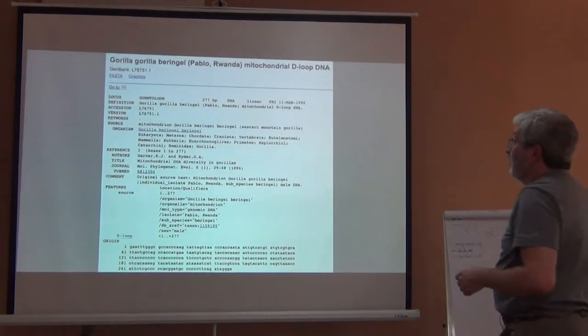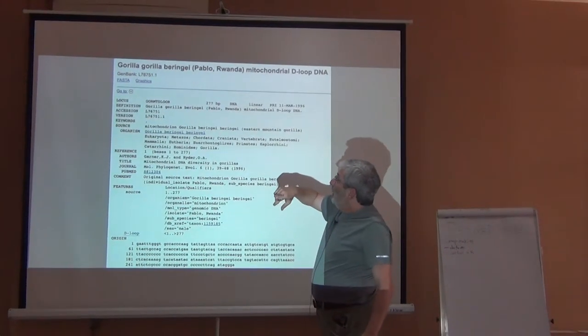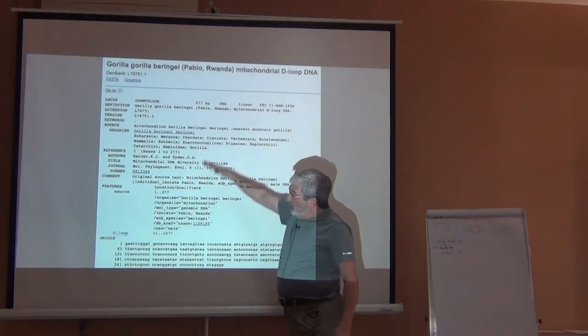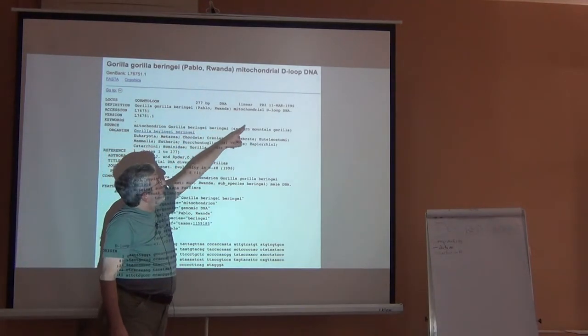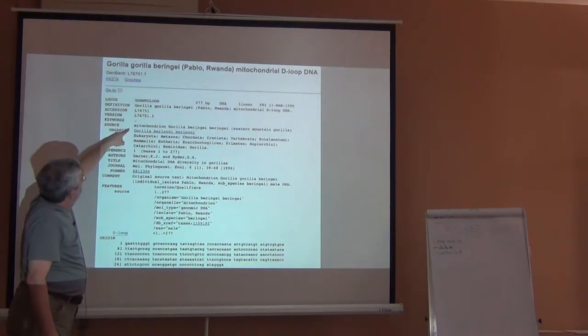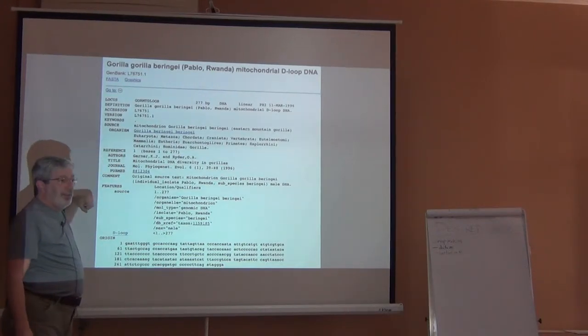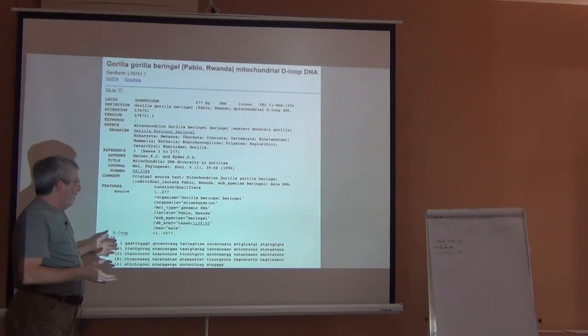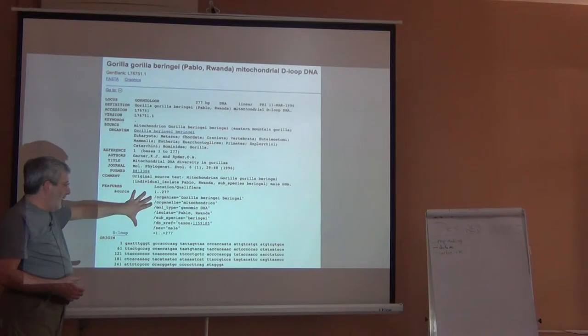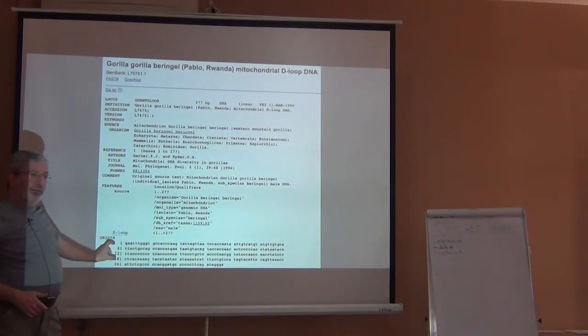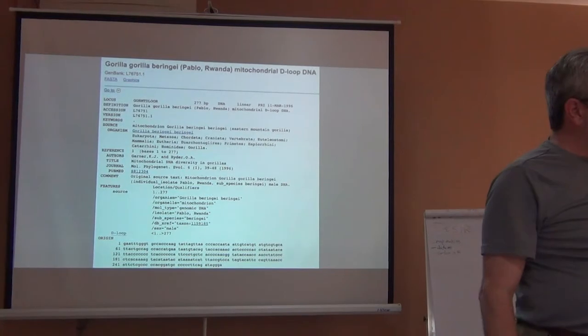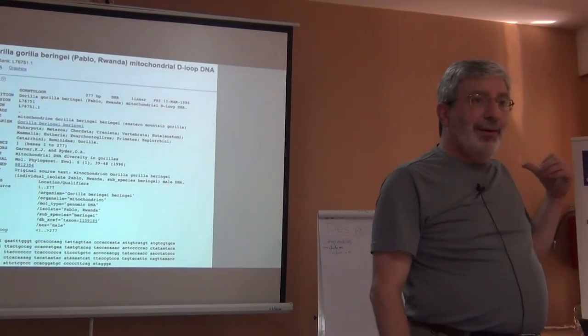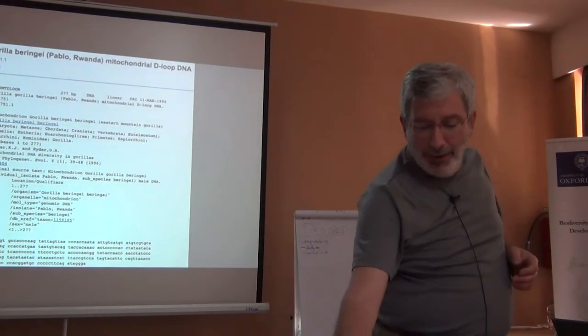Then you go into one of these records. This is one from Rwanda. You go into it, and there's first a bunch of metadata fields: a title, Gorilla gorilla beringii mitochondrial D-loop DNA, the taxonomic hierarchy, a citation. This sequence was associated with a publication. It has machine-readable metadata, and then here's the sequence. This is a very short chunk of the mitochondrion, but other ones will have thousands to millions of base pairs.